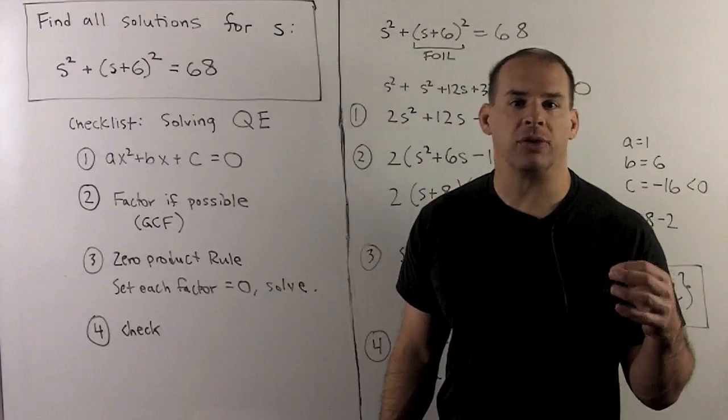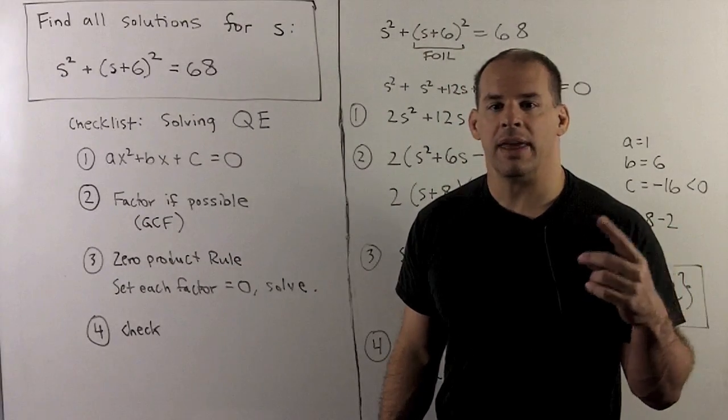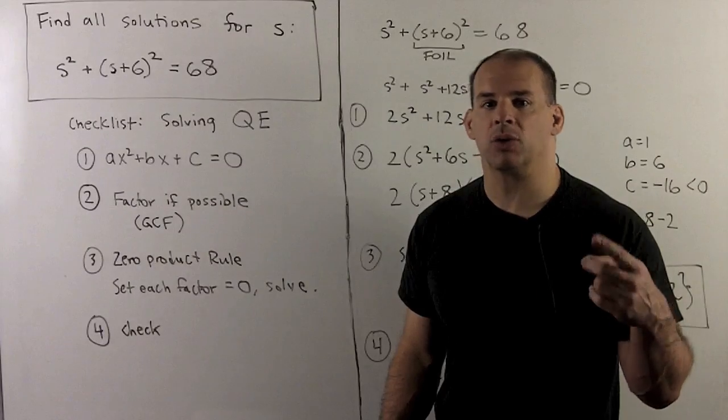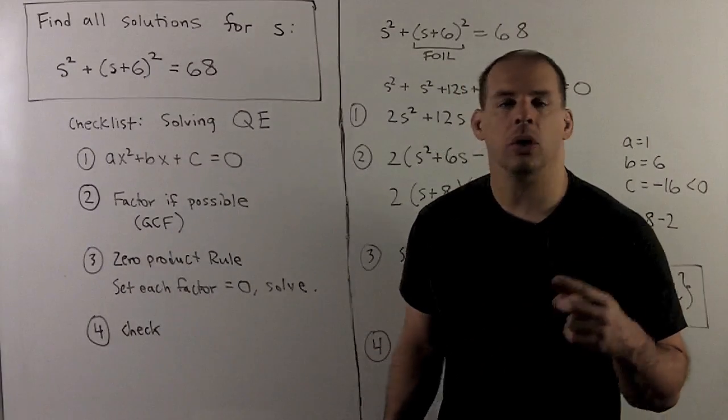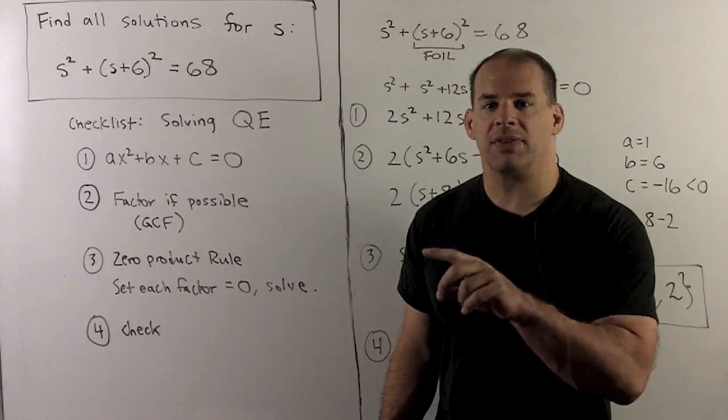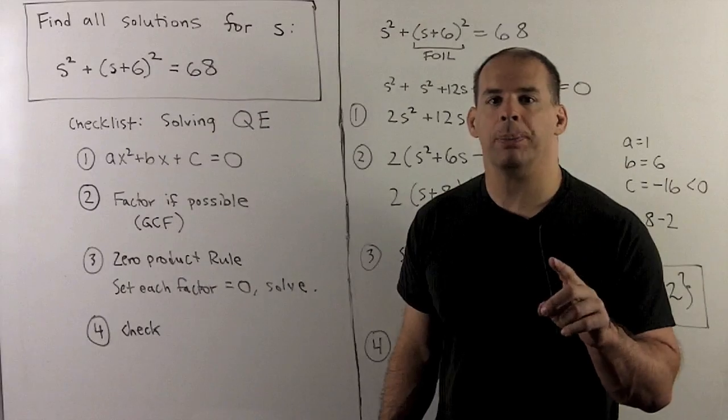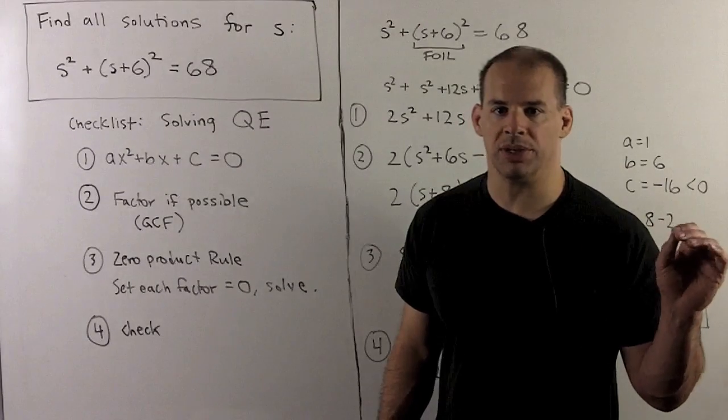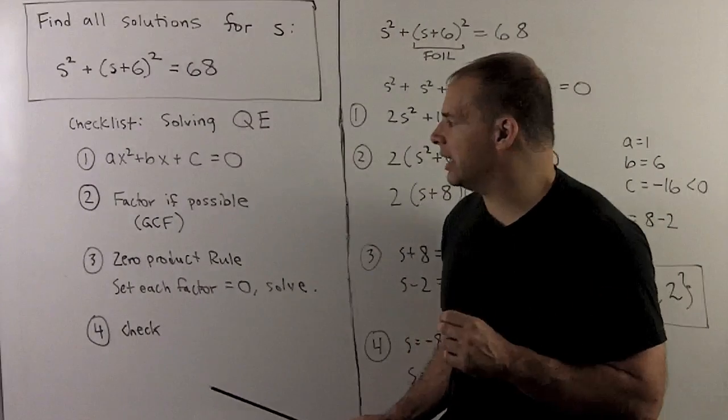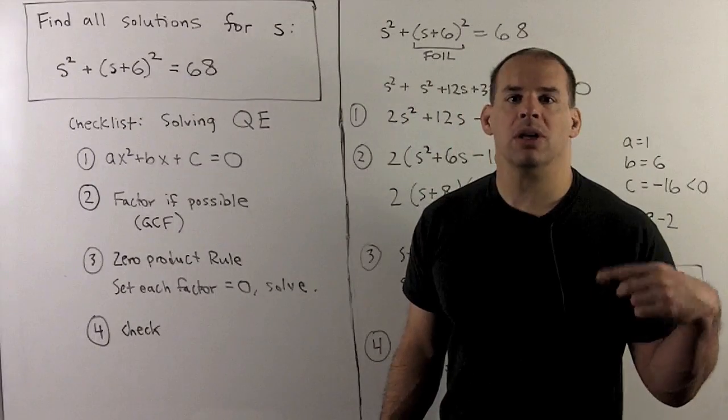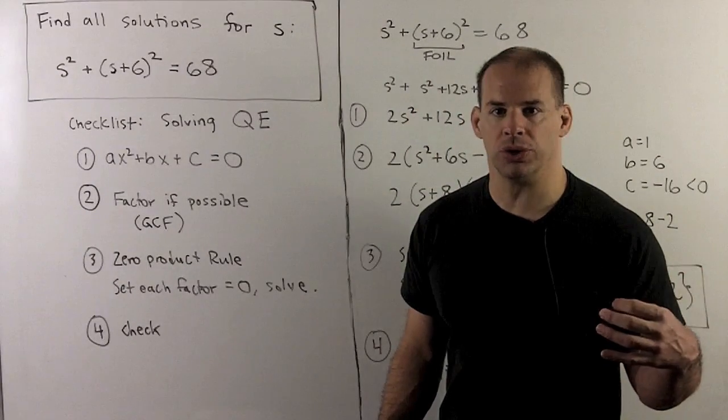First step there would be to factor out the greatest common factor. Then, to apply the zero product rule - what does that say? That says if our product of numbers equals zero, then at least one of those numbers was equal to zero. So here, we're going to take each factor from part two, set it equal to zero, solve, and that's how we get our solutions.